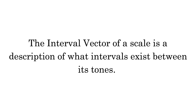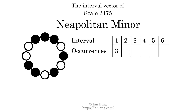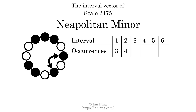The interval vector of a scale is a description of what intervals exist between its tones. There are 3 intervals with the size of 1 semitone, here, here, and here. There are 4 intervals with the size of 2 semitones, here, here, here, and here.